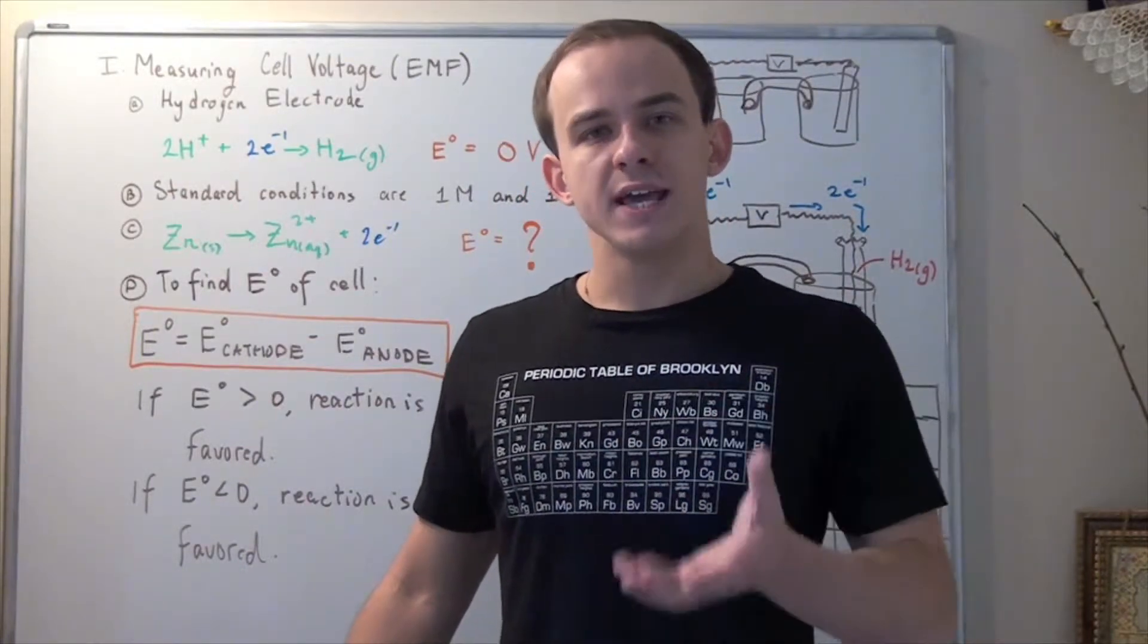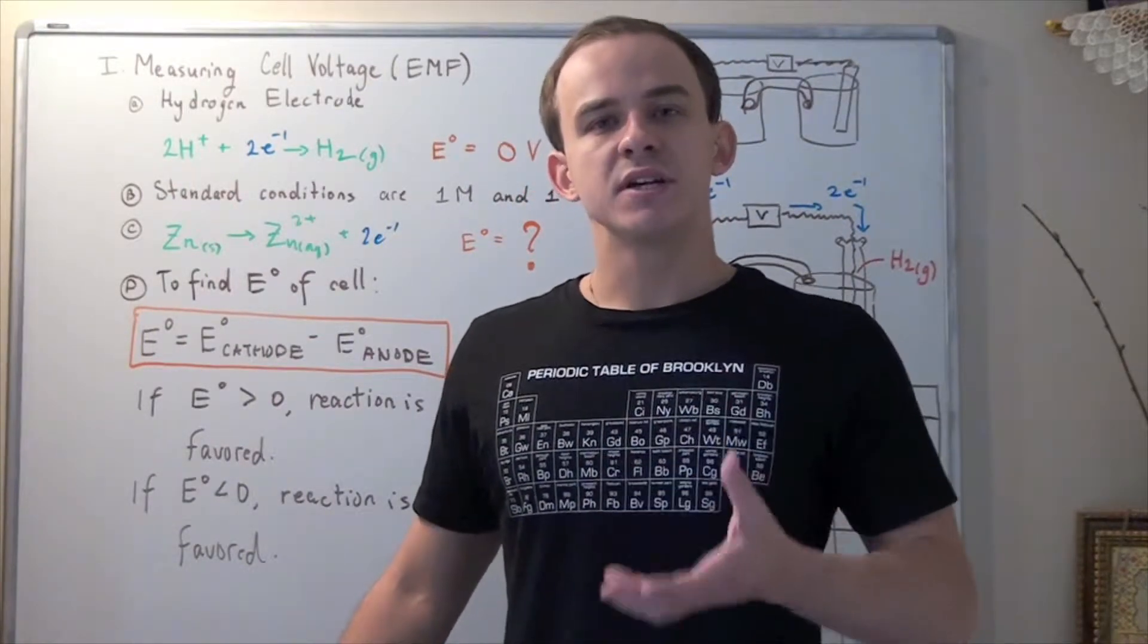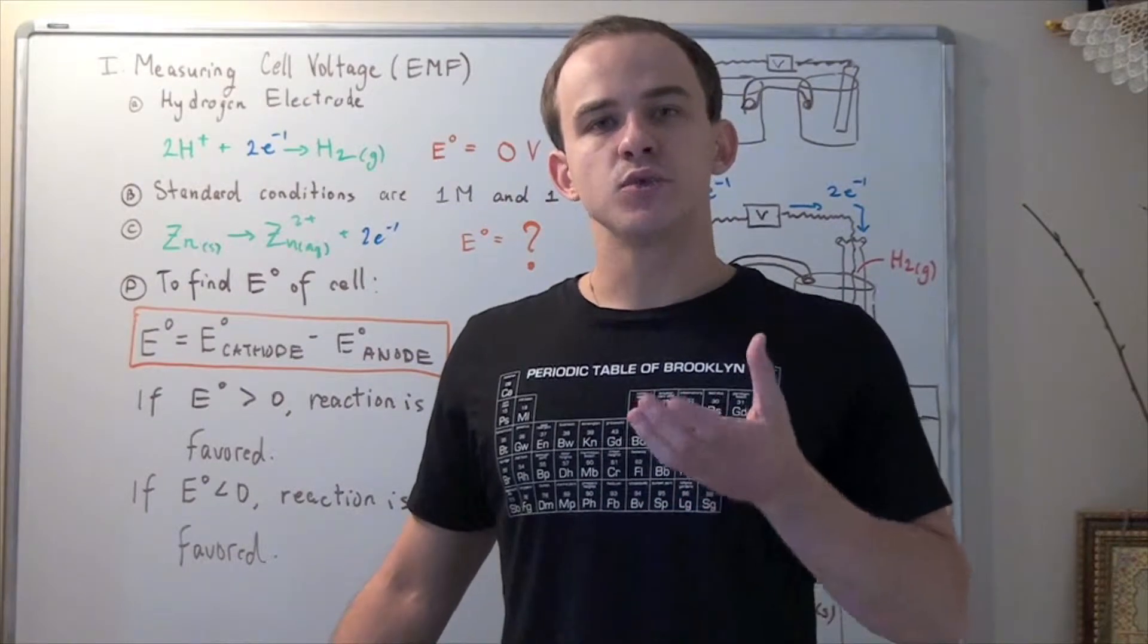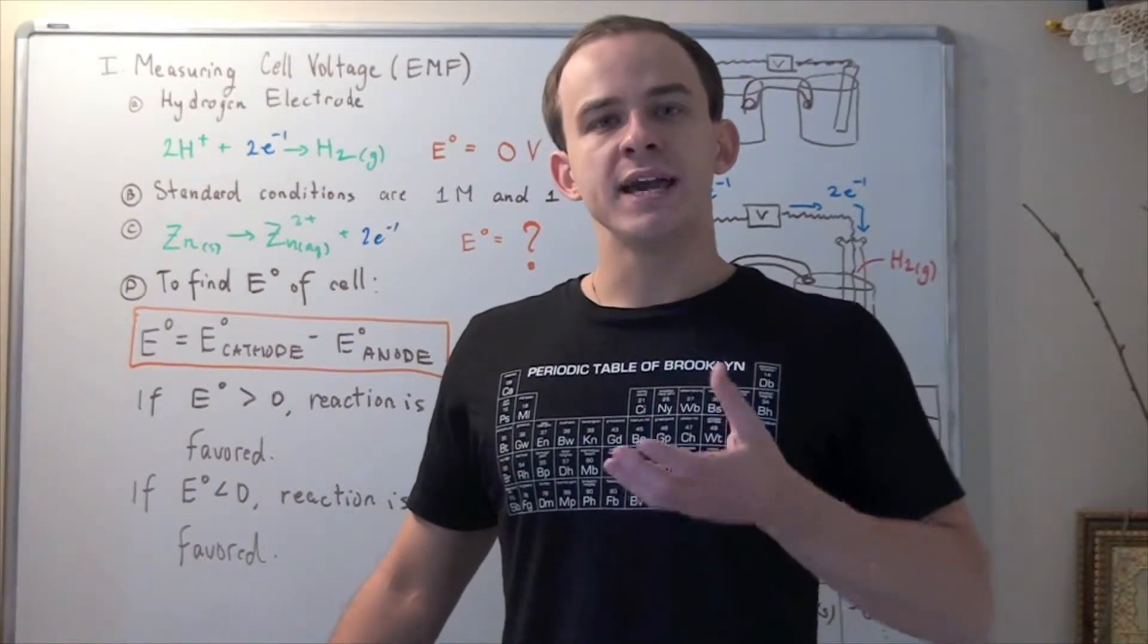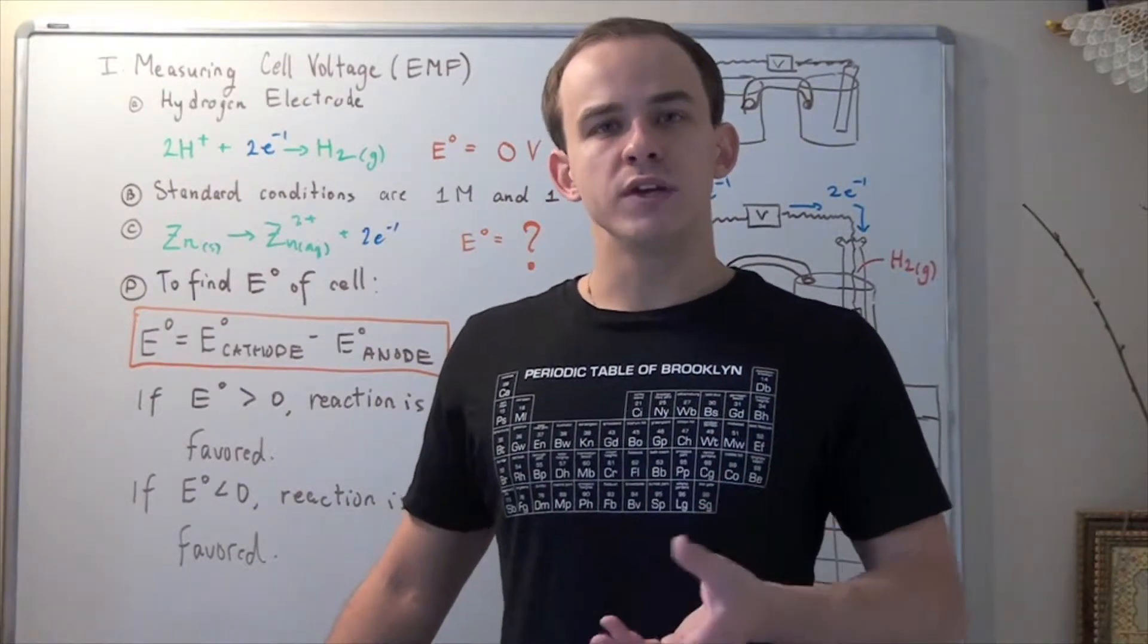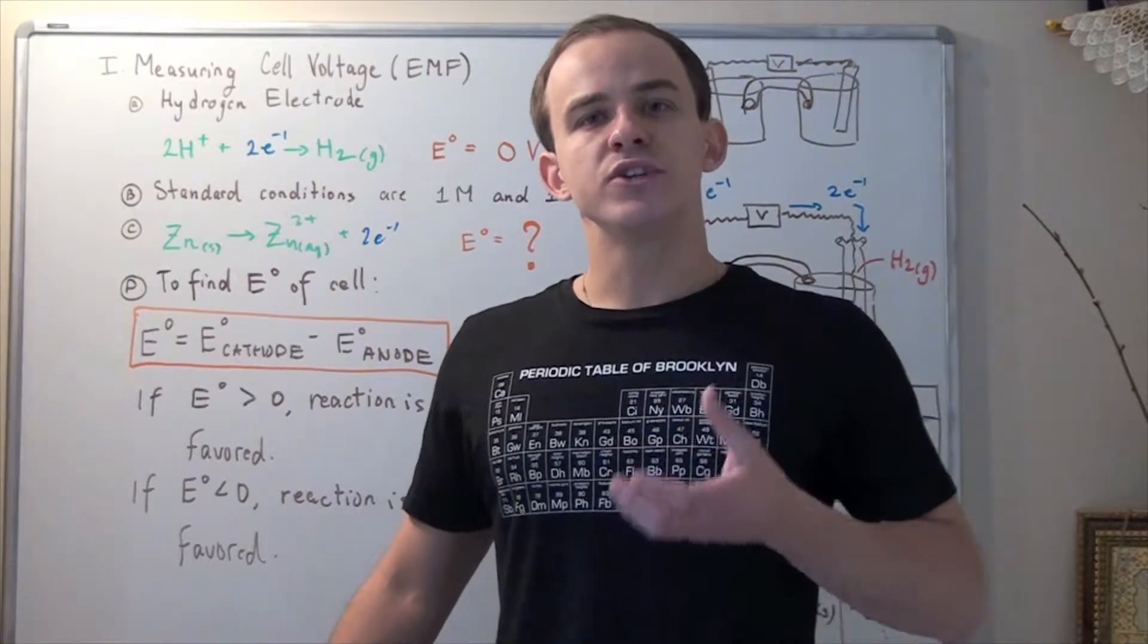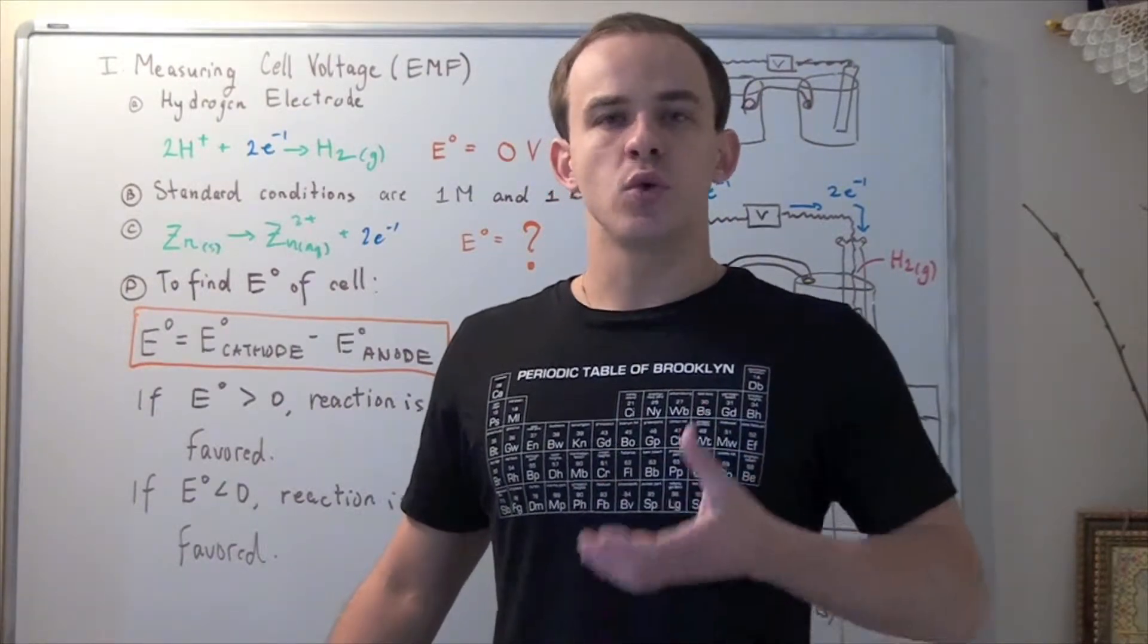Electrochemical cells called Voltaic Cells capture the chemical energy released by redox reactions. This chemical energy is captured in the form of moving electrons because moving charge has the potential to do work.